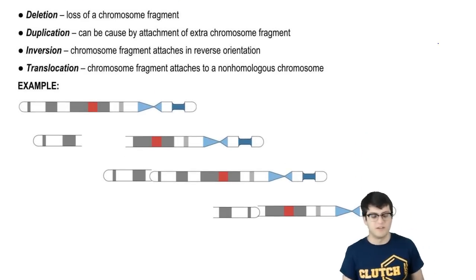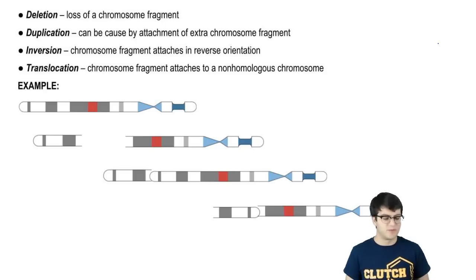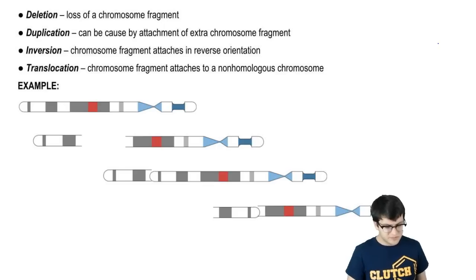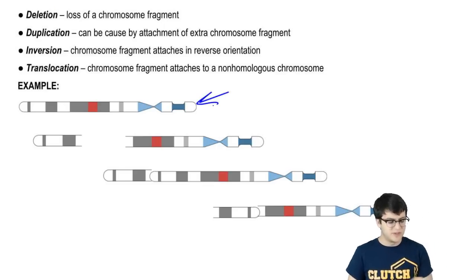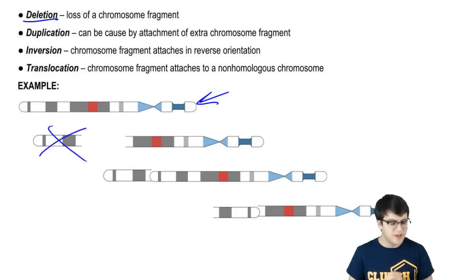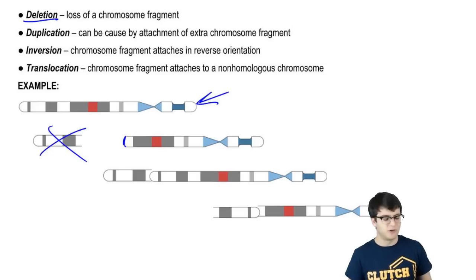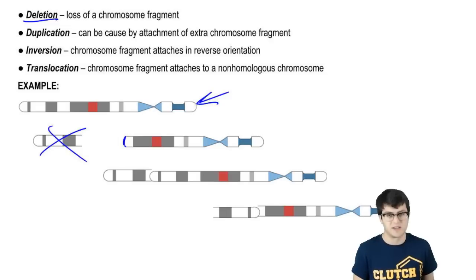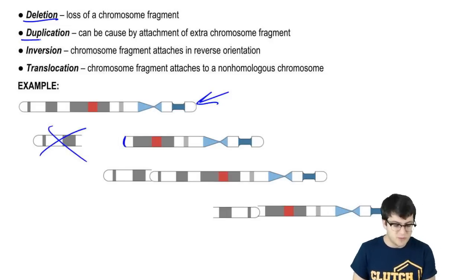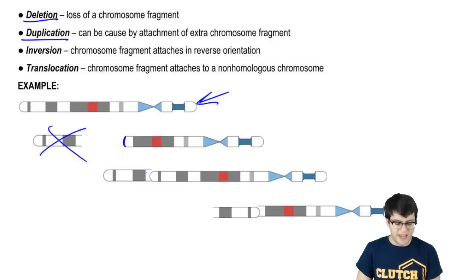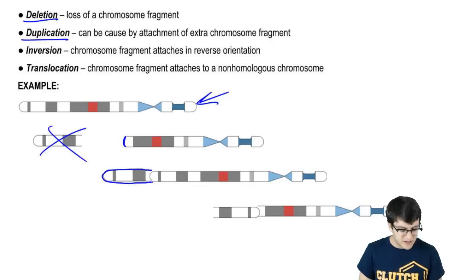There are other types of abnormalities that can occur, and these come in the form of chromosome damage and botched repair. Here we have a normal chromosome, and sometimes what you can end up with is a deletion, where part of that chromosome is deleted and removed, leaving a truncated chromosome that's missing a piece. You can also have duplications, where an extra fragment of a chromosome is duplicated and attached to that chromosome.